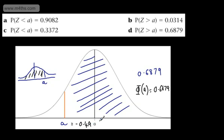So there are lots of different ways that you can think about those. In the next few videos, we'll look at alternative approaches. In this video, we've looked at finding the value of A given the probability.